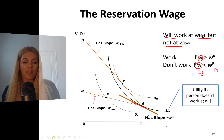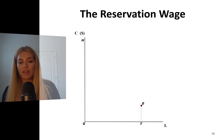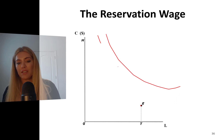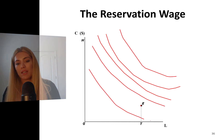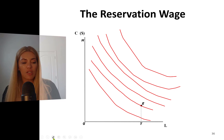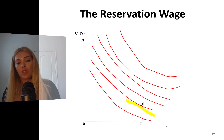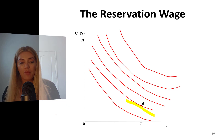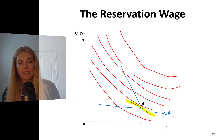To summarize graphically: how do you find the reservation wage? Find your endowment point. You have infinitely many indifference curves — all parallel, convex to the origin, and downward sloping. Find the one that passes through your endowment point and find the slope right at that point — that slope, negative WR, is your reservation wage. You will work if the wage rate is greater than this slope, and you will not work if the wage rate is less than this slope.